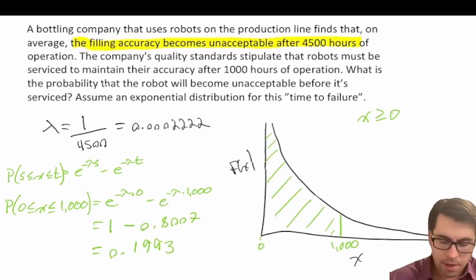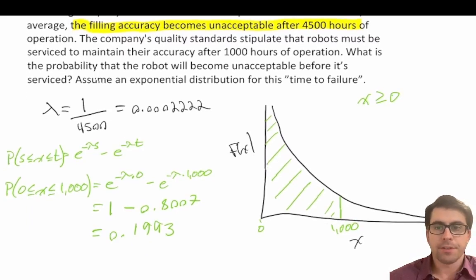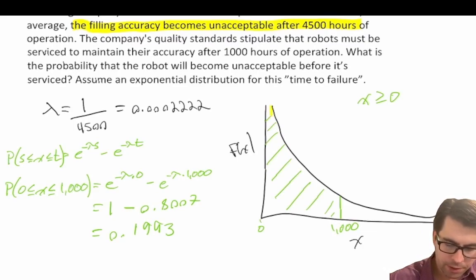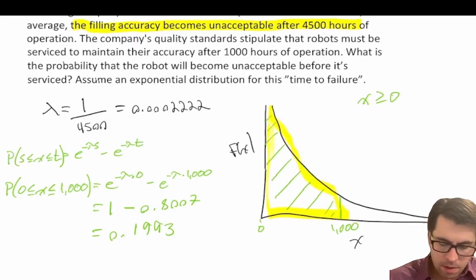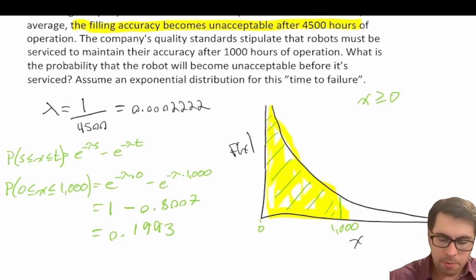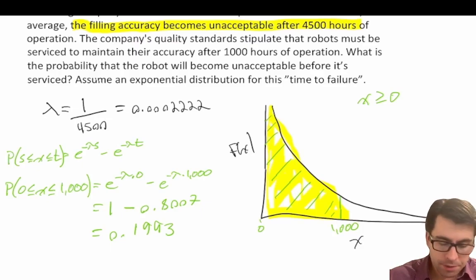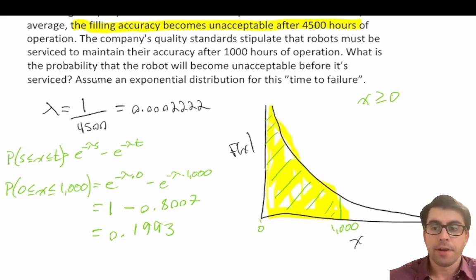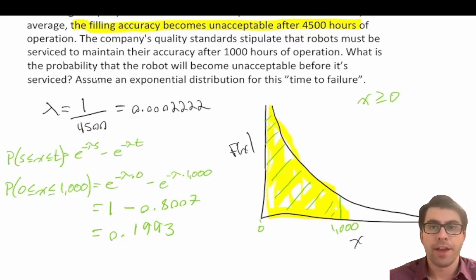Rounding to two decimal points, we get 0.1993. So the probability that the robot will fail before it is serviced at 1,000 hours is 0.1993 — in other words, 19.93% of the robots will fail before 1,000 hours of operation.